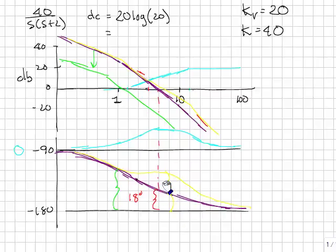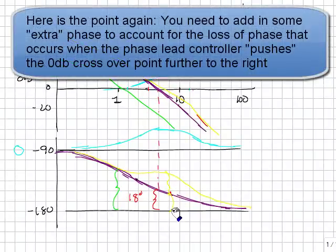So when you design a phase lead controller, you can't just say, okay, here's the phase margin. I want to add this amount of phase at this frequency because adding the phase margin will push the crossover point out and likely decrease the total phase margin that you have. Thus, you have to add in more phase margin. So you'll see how to do that.